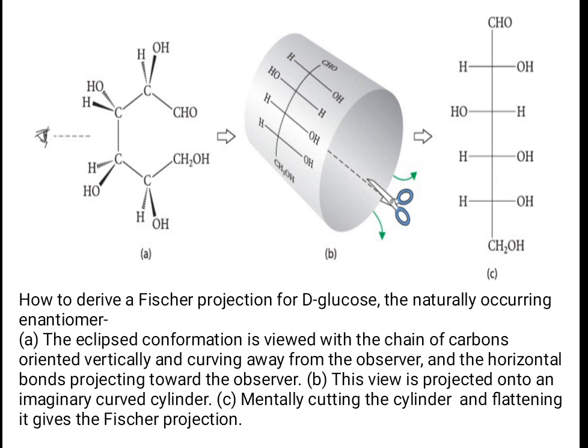This is the eclipsed conformation of a molecule, and here is how to derive a Fisher projection for D-glucose. This is the open-ring structure of D-glucose, the naturally occurring enantiomer. First, the eclipsed conformation is viewed with the chain of carbons oriented vertically and curving away from the observer, with horizontal bonds projecting toward the observer. This view is projected onto an imaginary curved cylinder.